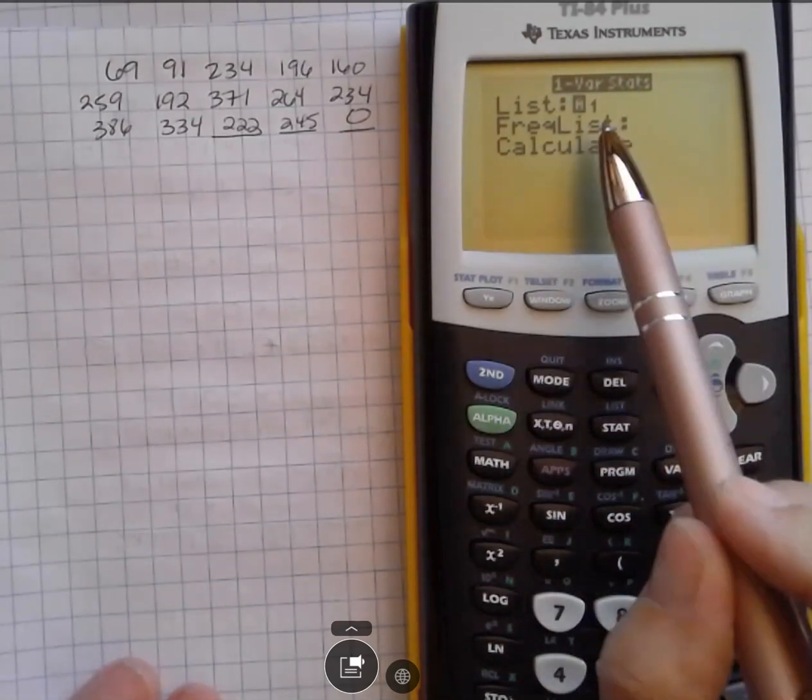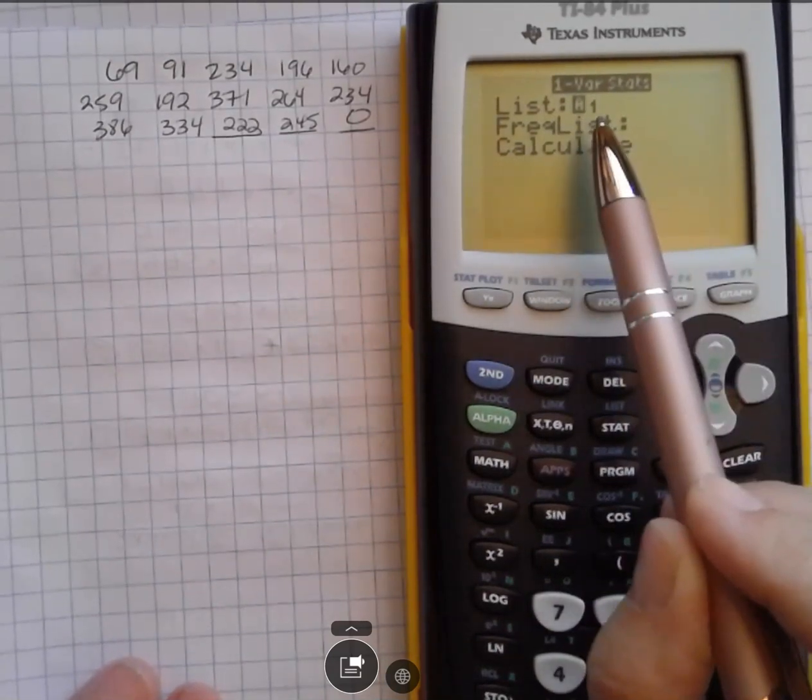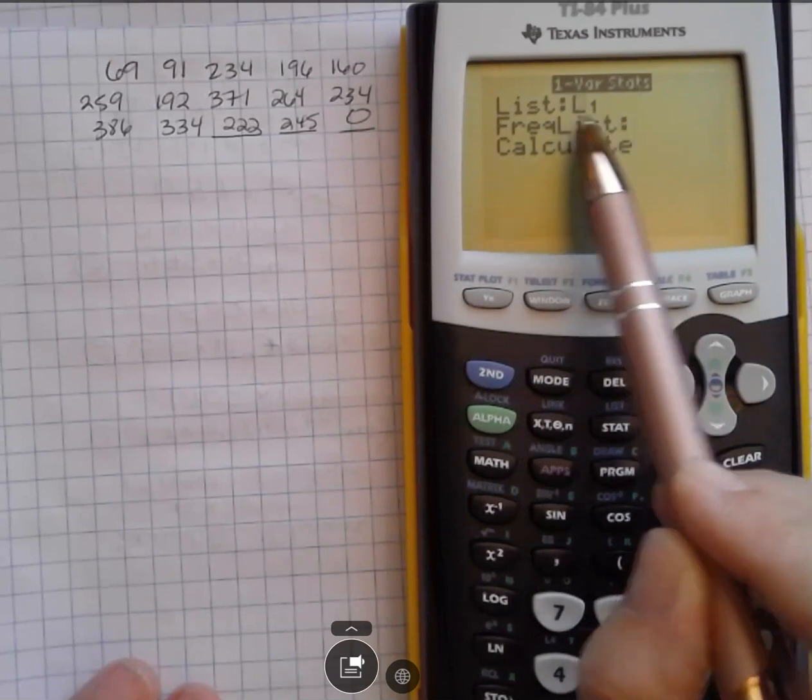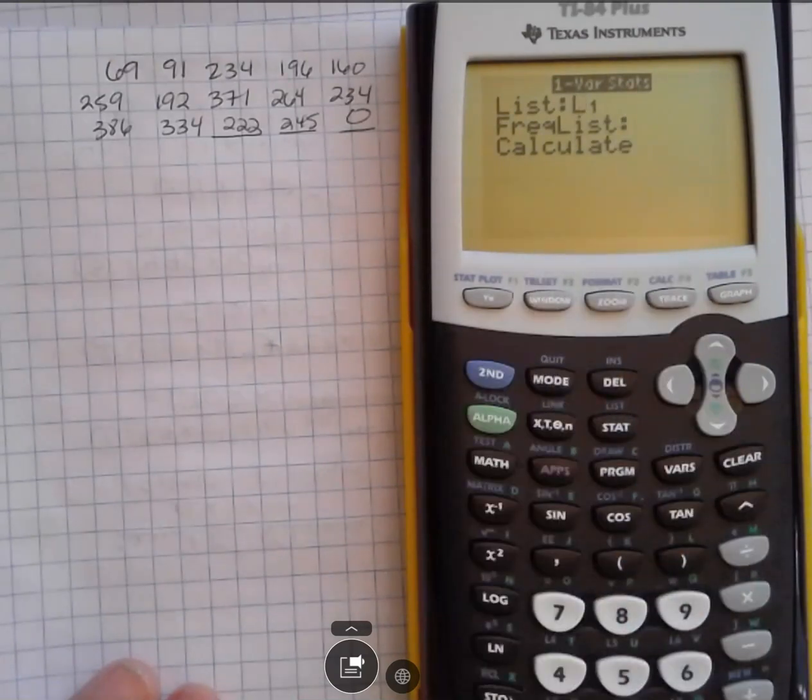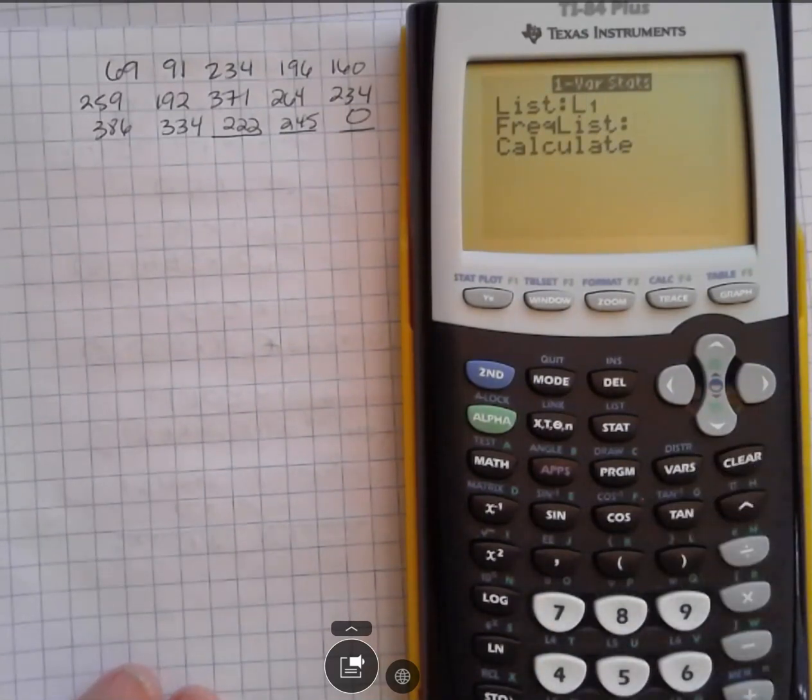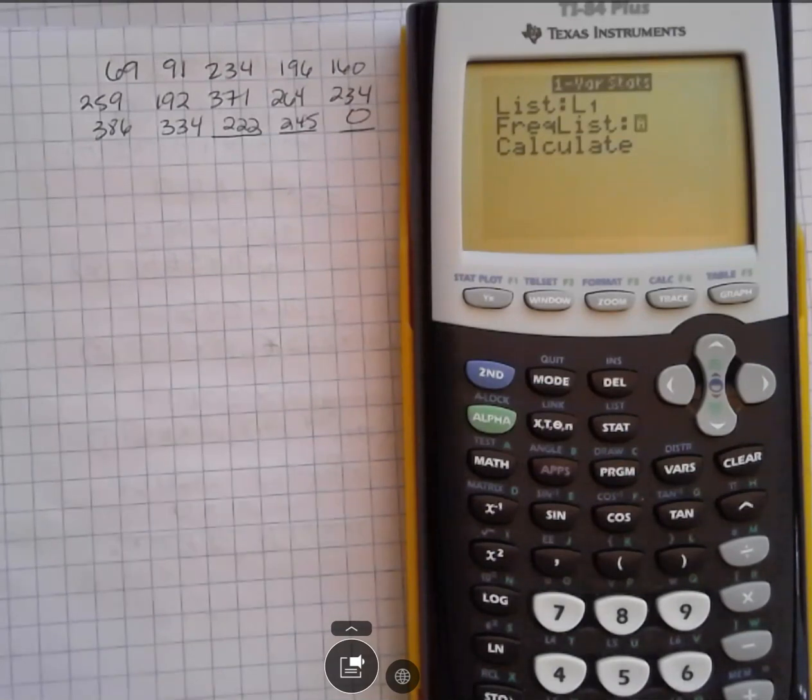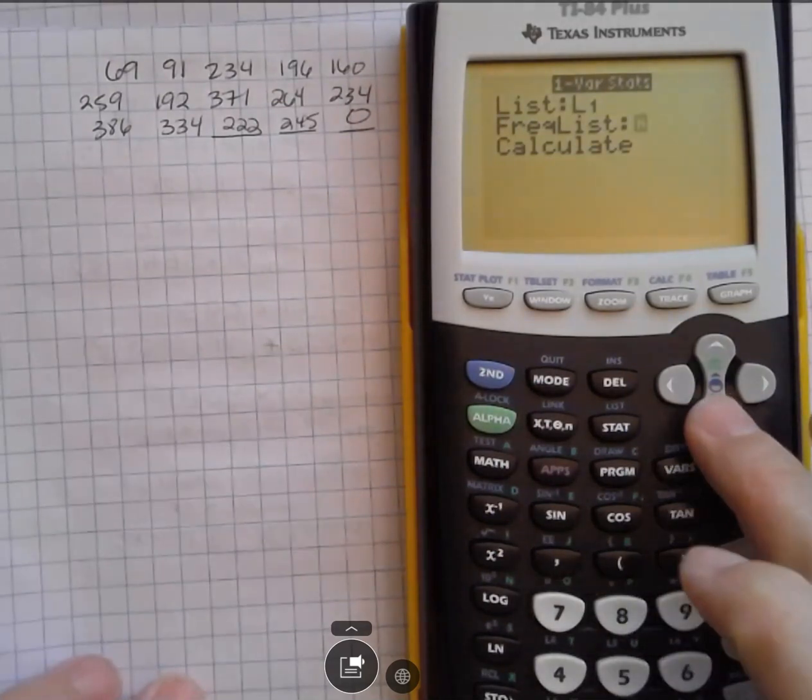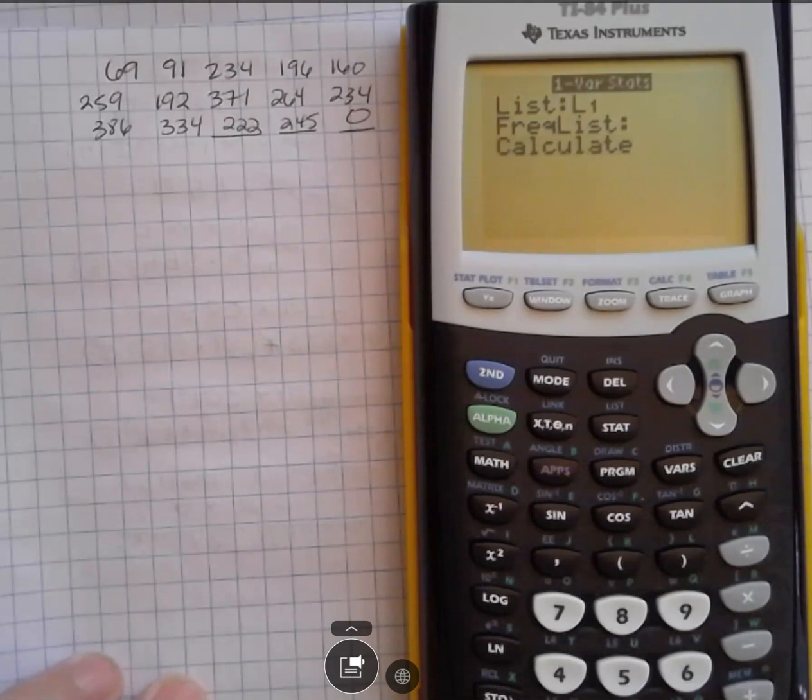And what you see flashing here is it's flashing L1, which says we are looking at data in list L1. And that is where we put our data. So L1 is perfect. And then it has the frequency list. I went down arrow to get to that next thing. But I don't have frequency here. That would be if I had some like 222 five times and 234 six times. But all of our frequencies are one. So I don't need to worry about doing that. And I can go down one more time to calculate and then hit enter.